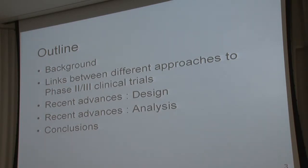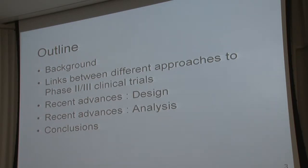What I'd like to do in my talk today is start with a little background. Many of you may be familiar with phase two-three clinical trials, but I want to talk about the setting and give a little notation. To my knowledge, there are three general approaches for combining data across the phases. Chris has already spoken about the combination testing approach, and I'll bring out two other different approaches. I then want to talk about recent advances in design, including the use of early endpoints in a phase two-three setting, and then discuss estimation — point estimates and confidence intervals — under the heading of analysis, and finally end with some conclusions.